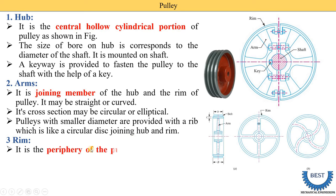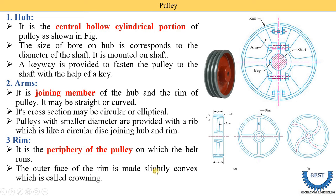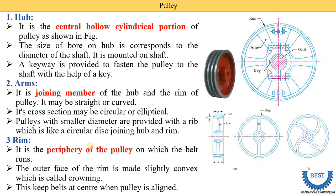The third component is the rim. It is the periphery of the pulley on which the belt runs. The outer face of the rim is made slightly convex, which is called crowning. In the side view diagram, we can see that the outer periphery is not completely straight — it is slightly convex. This crowning keeps the belt at the center of the pulley when the pulley is running.